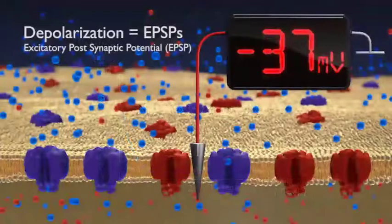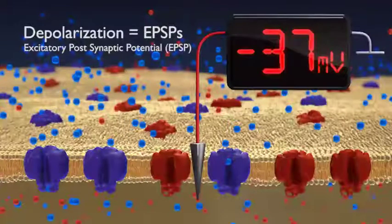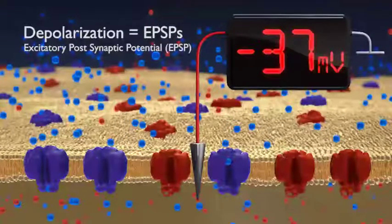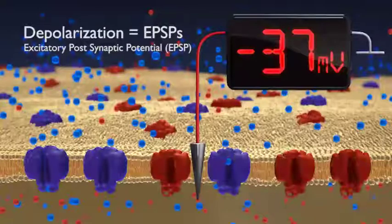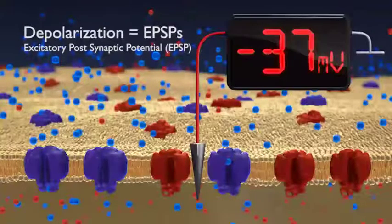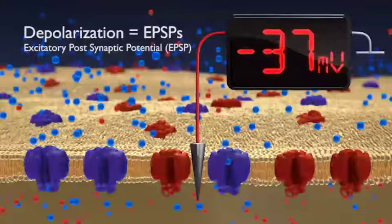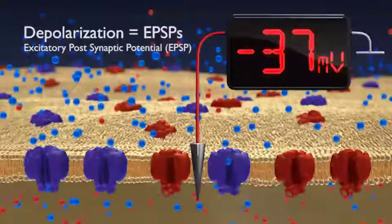Conversely, the neuron can become excited, known as depolarization or an excitatory postsynaptic potential, abbreviated as EPSP.